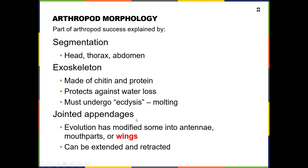They also have jointed appendages, and that's what the name arthropod means — jointed legs. If you know the term arthritis, which means inflammation of the joints, the root 'arthra' means joints. 'Pod' or 'poda' means foot, in this case appendages or legs. So they have lots of appendages, and the legs are jointed.